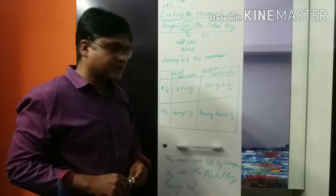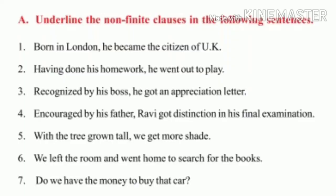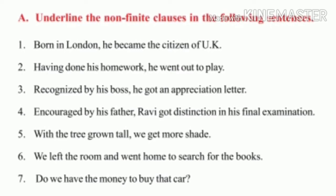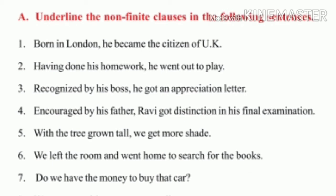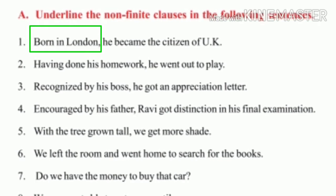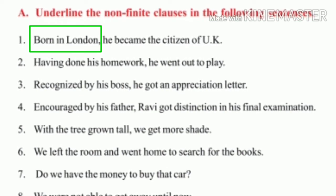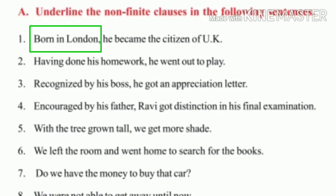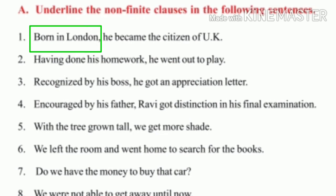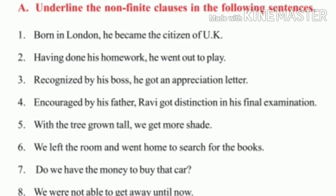For better understanding, we shall learn more exercises and sentences from the textbook. Underline the non-finite clauses in the following sentences. First: 'Born in London, he became the citizen of the UK.' 'Born in London' is a present participle and does not carry any tense marker, so it is the non-finite clause. Second: 'Having done his homework, he went out to play.' It is a perfect participle — 'having done his homework' is the non-finite clause.